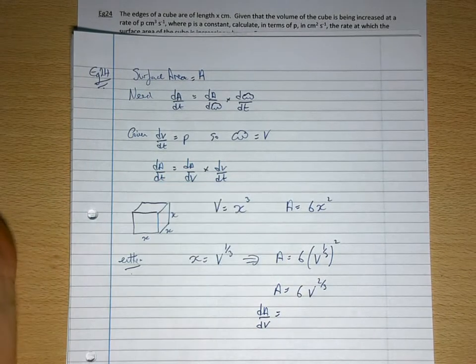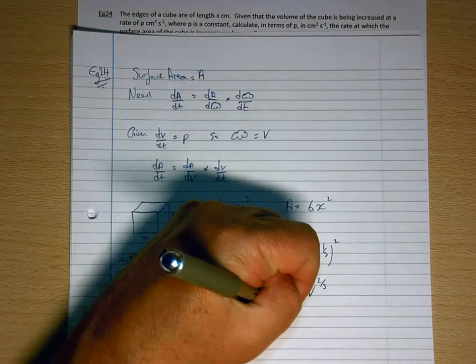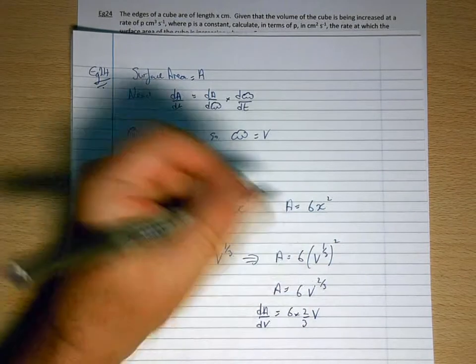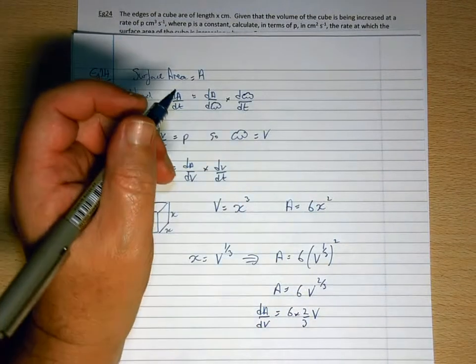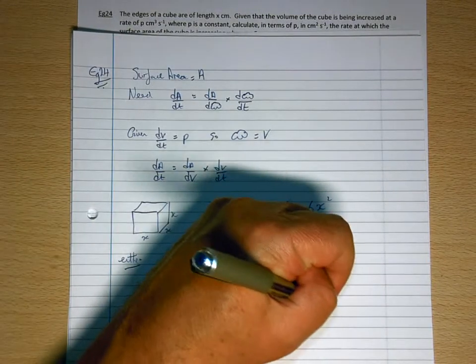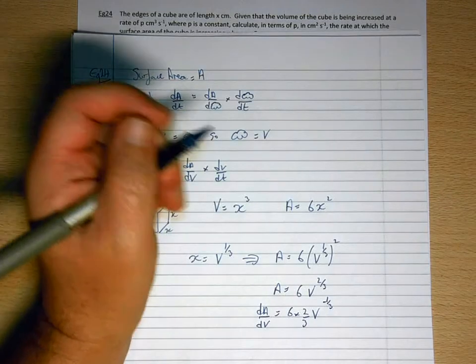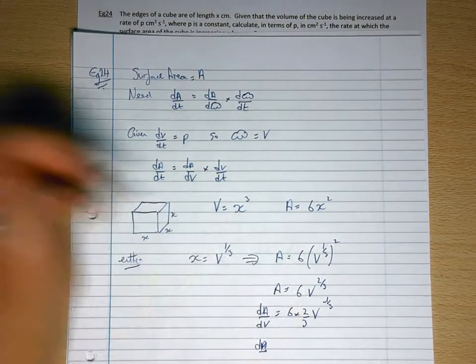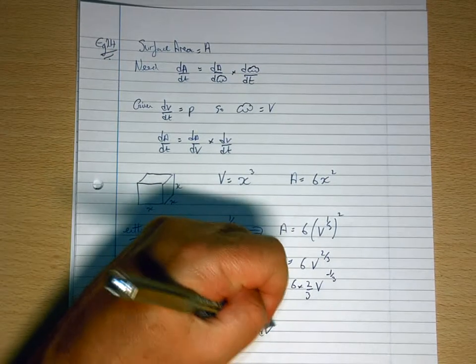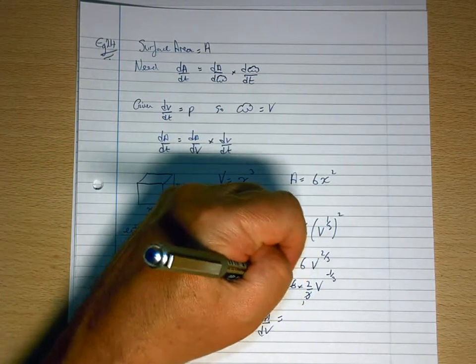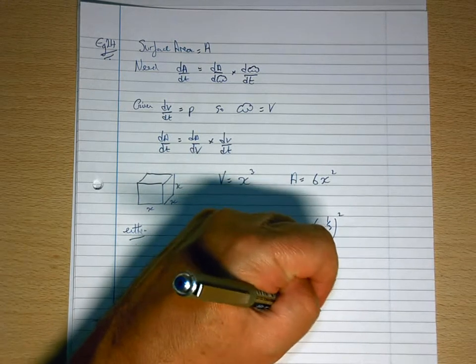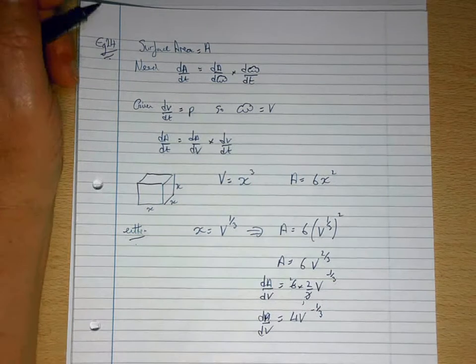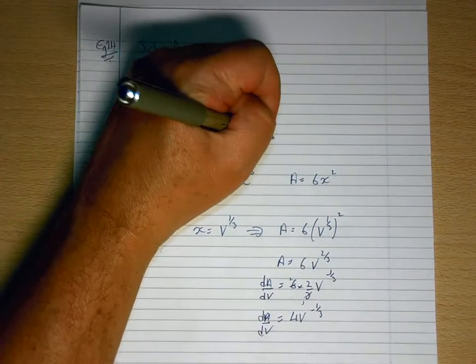You get dA/dV is 6 times 2/3 V, and when you subtract 1 from 2/3, you get minus 1/3. So dA/dV equals 4V to the minus 1/3.